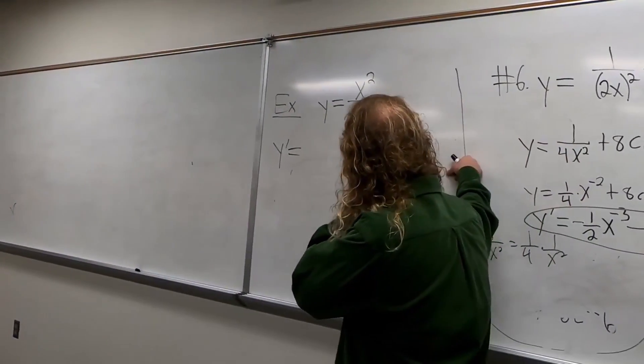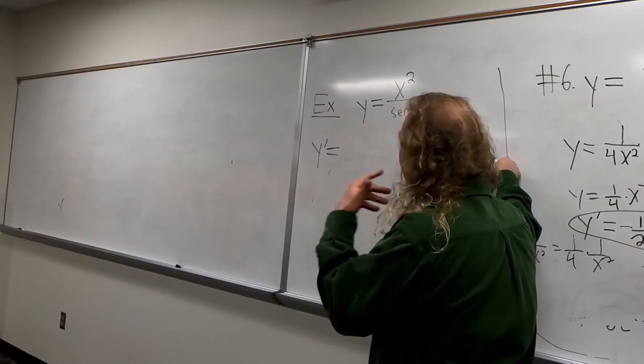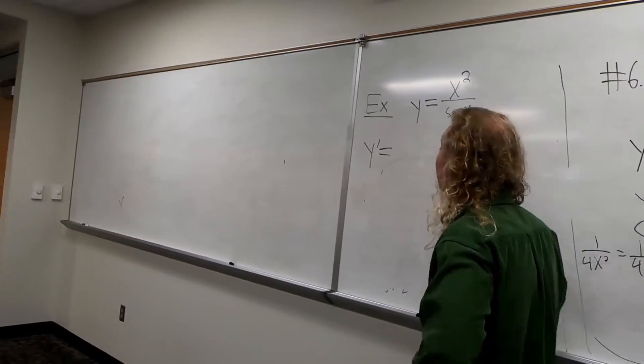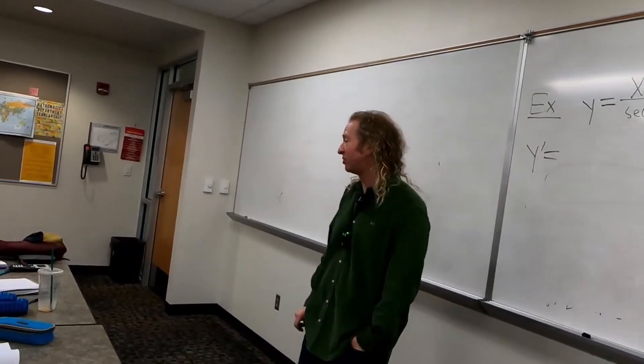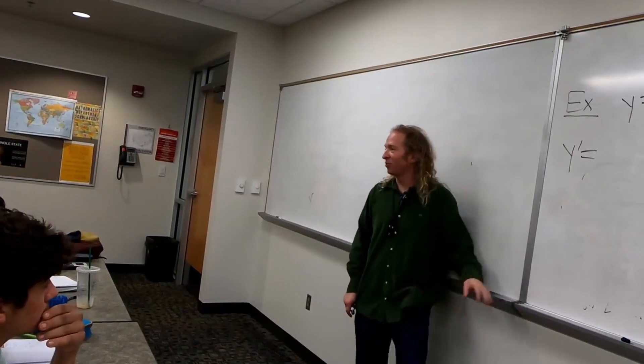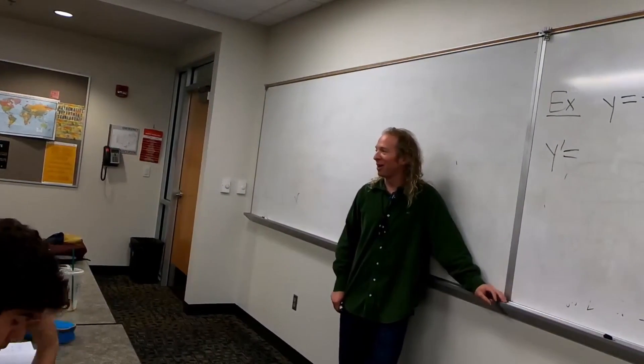Student: Could you put like one over cosine and then bring the cosine up so it's x squared and then use the product rule? Yes, that's even better, Aaron. Wow, that's actually an easier way to do it.